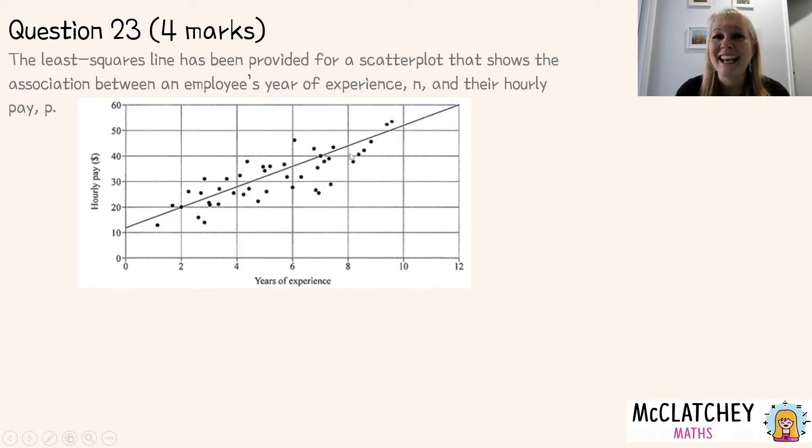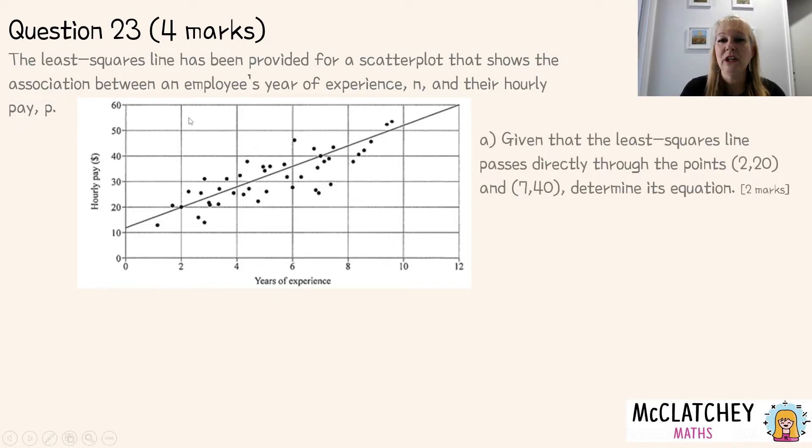Let's move on to question 23. It's our second and last question for this video. It's worth four marks. The least squared line has been provided for a scatter plot that shows the association between an employer's years of experience n and their hourly pay p. So we can see n's along here the years of experience hourly pay is p. We can have a very quick view of this. We can see that it's trending upwards so the implication is that the more years of experience you have your pay should go up hopefully. Okay we're asked to use our least squared regression line equation and we actually need to come up with it. We're told it passes through two points 220 and 740. We've got to come up with that equation two marks. Now this is where a lot of students last year in 2022 may have come unstuck because they don't remember how to do this. This is year 11 foundational least squared line work. It's the sort of stuff you've been doing since probably grade nine coming up with the equation of a line given two points. So I'm going to recap that for you today.